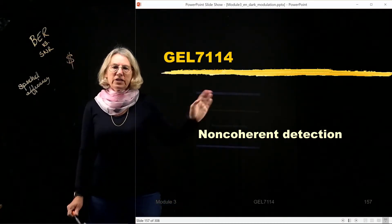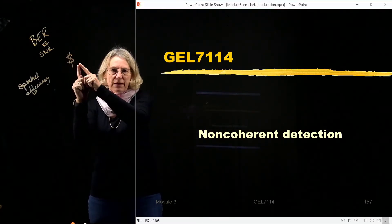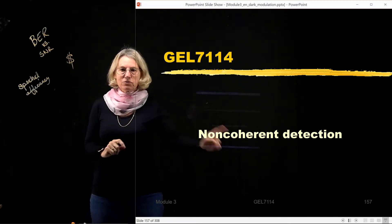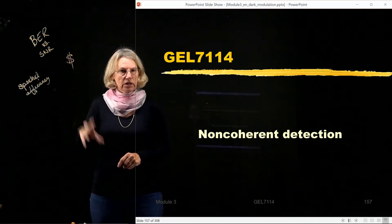So the reason that we have non-coherent detection is cost. It's that we can bring down the cost when we use non-coherent detection instead of coherent detection. So this is really the motivation why we're going to look at that.